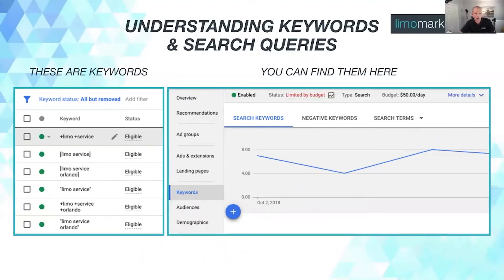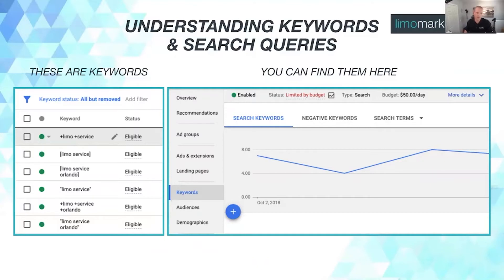This is where you can find the keywords. This really hasn't changed much — it's been like this for years. You'll see two slides from now that they actually changed the location of where you see your search terms. But do you see those keywords? Some have pluses in front of them, some have brackets around them. What I want you to notice is that none of those keywords are without either pluses or brackets, and that's incredibly important.